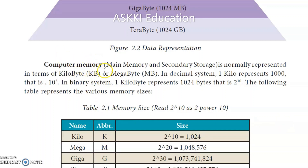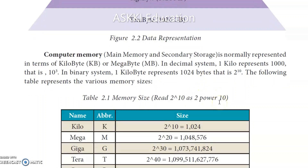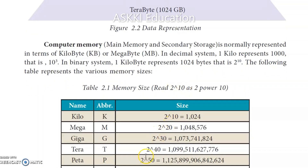There are two types of computer memory: main memory and secondary storage memory. Memory is represented in terms of kilobytes and megabytes. In the decimal number system, one kilo represents 1000, but in the binary number system, computer memory uses powers of 2. Binary base value is 2, so 2 power 10 is 1024 — therefore 1 kilobyte equals 1024 bytes. The units are: kilobyte = 2^10, megabyte = 2^20, gigabyte = 2^30, terabyte = 2^40, petabyte = 2^50.